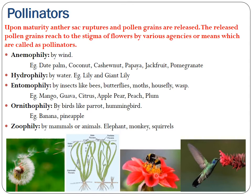Entomophily is seen in mango, guava, citrus, apple, etc. In ornithophily, pollination is carried out by birds like parrots or hummingbirds — we usually see hummingbirds sucking nectar from flowers, which assists in pollination. Examples are banana and pineapple. The last type is zoophily, where mammals or animals like elephants, monkeys, or squirrels help in pollination as they move between plants and branches.